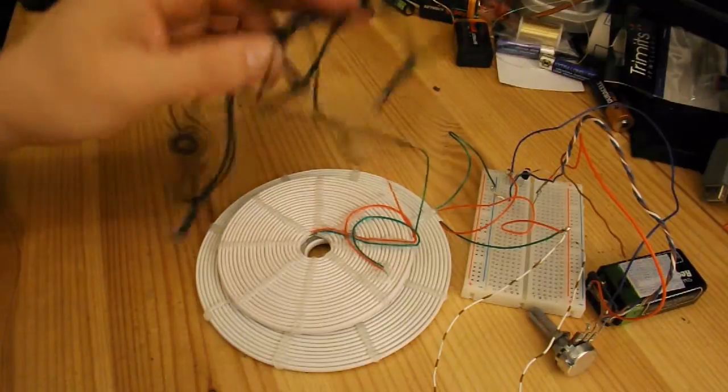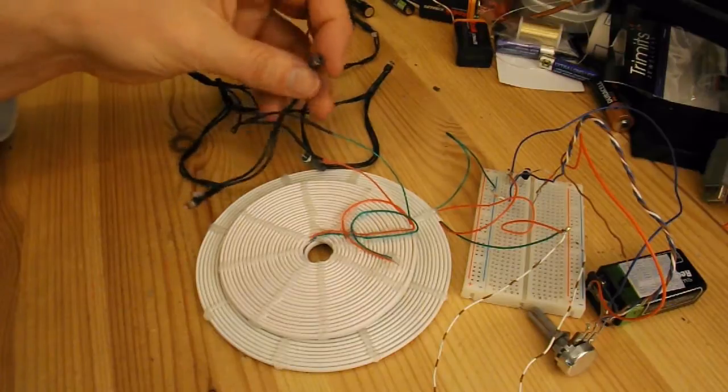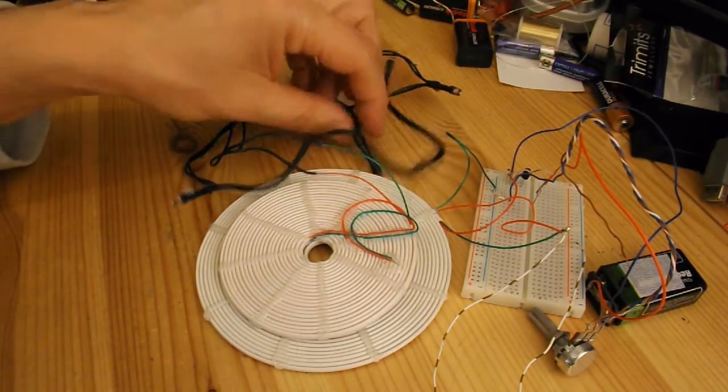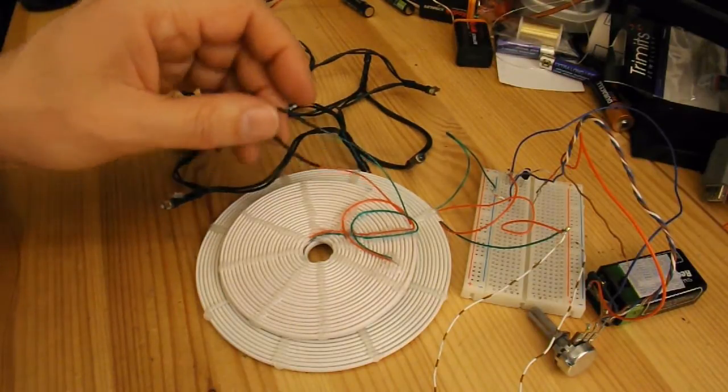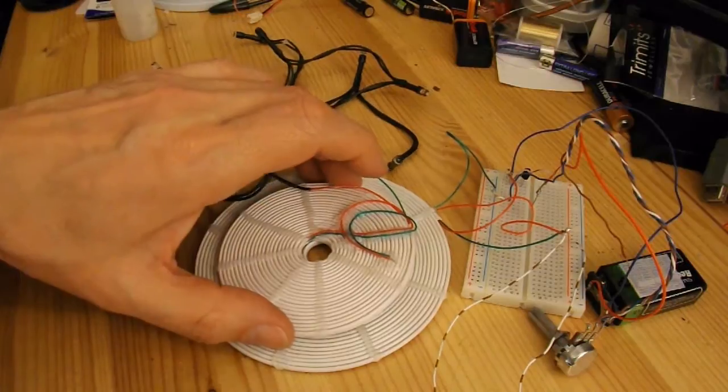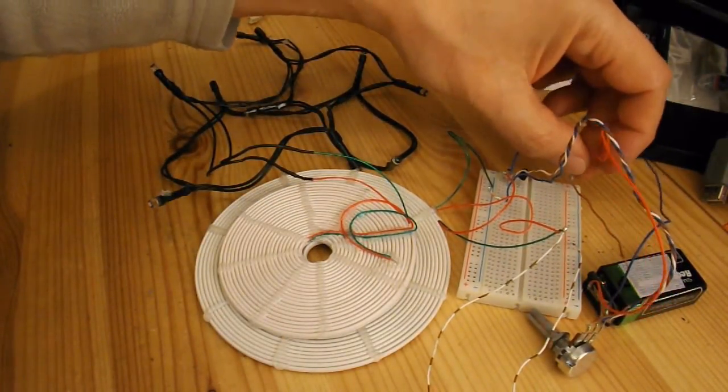And I've got a little string of LEDs there. I think they were Christmas decoration LEDs. They normally run off two AA batteries. But I've taken the battery box off and just soldered them straight onto the pancake coil. So, quick demo. If I just connect up my battery.